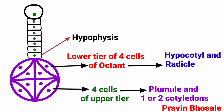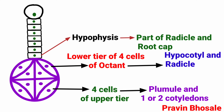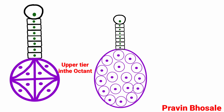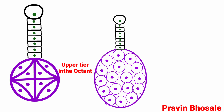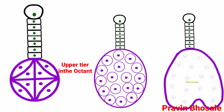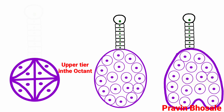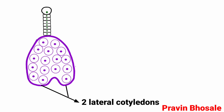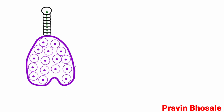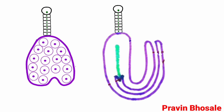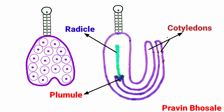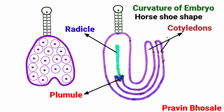The hypophysis, by further division, gives rise to part of the radicle and root cap. Subsequently, cells in the upper tier of the octant divide in several planes to become heart-shaped, forming two lateral cotyledons and a terminal plumule. Further enlargement of the hypocotyl and cotyledons results in a curvature of the embryo, making it appear horse-shaped.